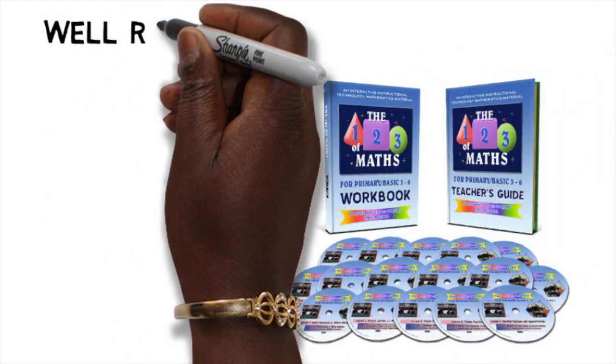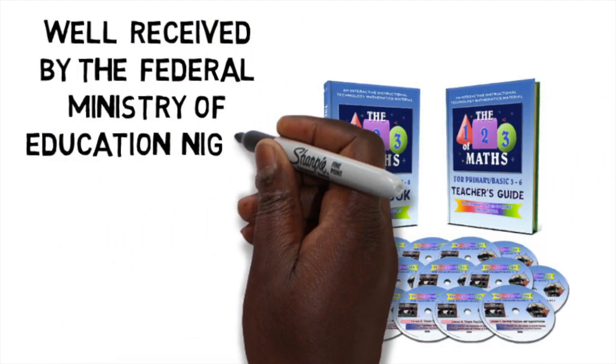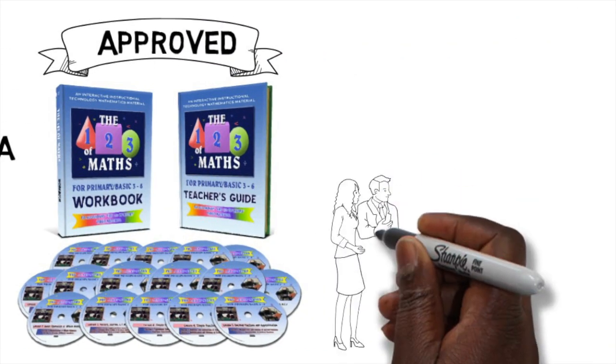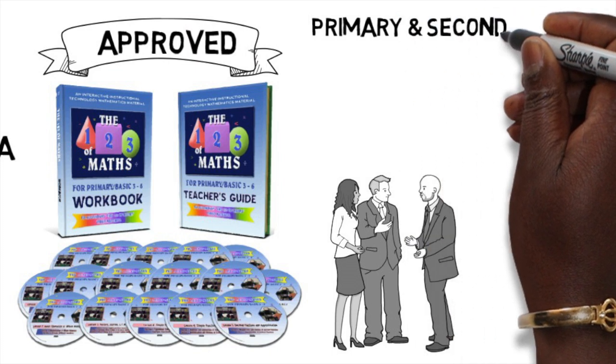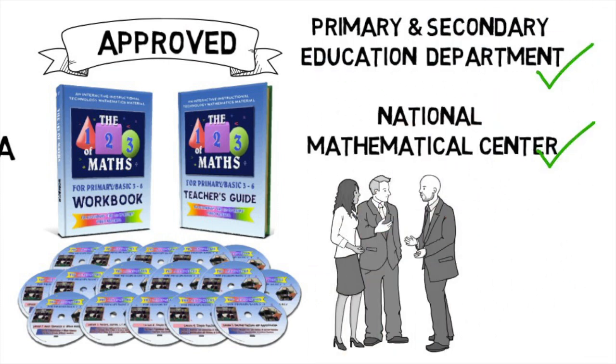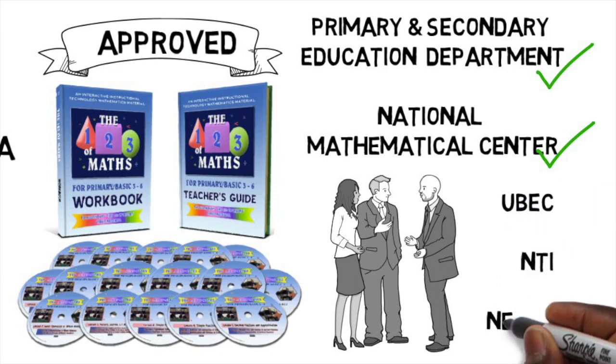The 1-2-3 of maths was well received by the Federal Ministry of Education, Nigeria, and was approved for use in schools following its review by a committee consisting of all stakeholders in the primary and secondary education department, National Mathematical Center, and other relevant organizations. Including UBEC, NTI, and NERDC.